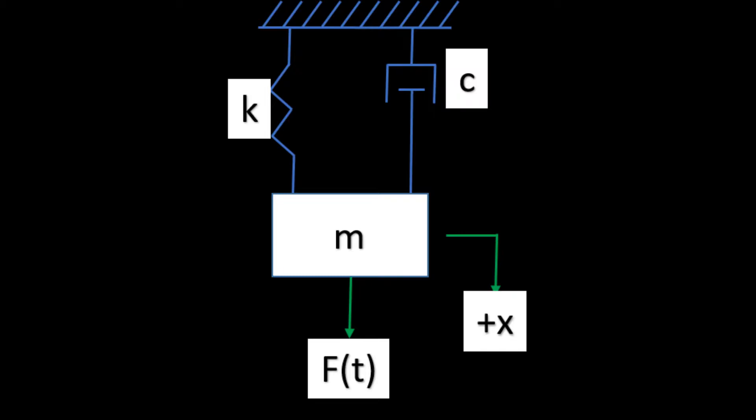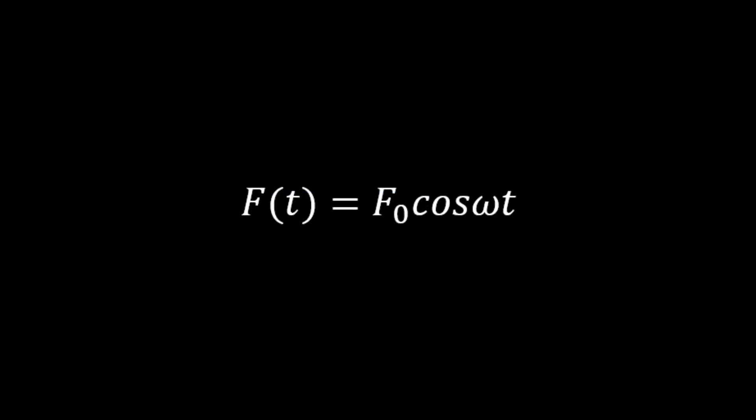A spring-mass-damper system shown in the figure represents a physical model of a machine supported by a flexible base, like amortizers, elastic rubbers, unrigid base itself, and so on. Here, m is the mass of the machine, k and c denote the equivalent spring constant and damping coefficient of the base, respectively. f(t) is the exciting force created by centrifugal effects of unbalanced rotating shafts and other moving unbalanced components of the machine, especially at high speeds. The simple behavior of this repeated exciting force can be represented by the harmonic function given here.